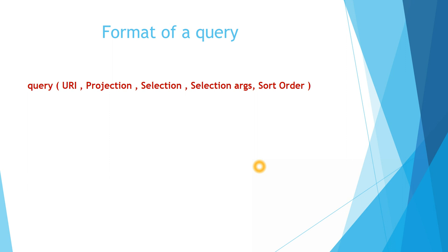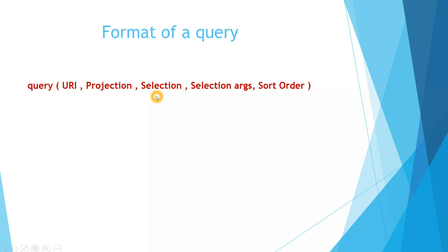of a query. This query is almost the same as an SQL query. This query function has different parameters: URI is your table name, projection acts as the columns of the particular table, selection